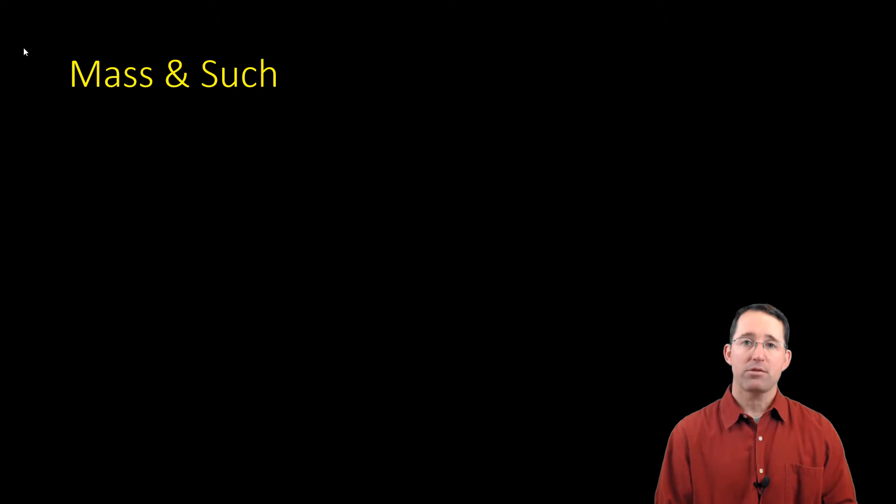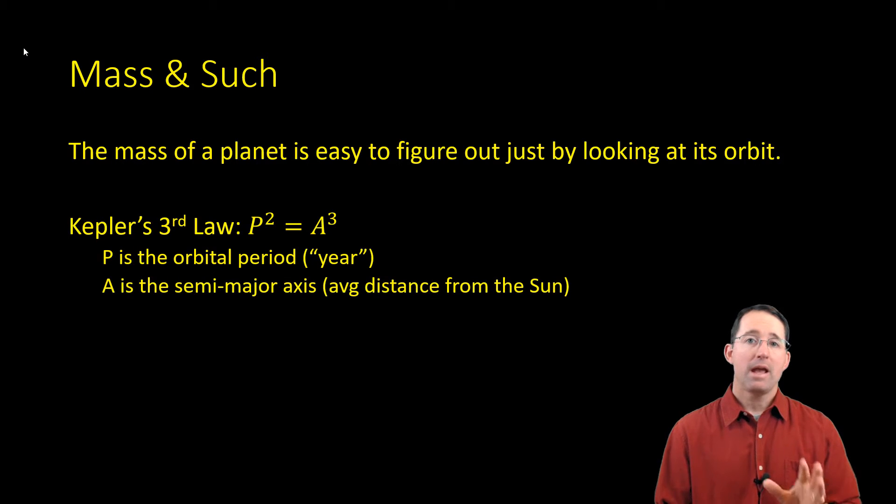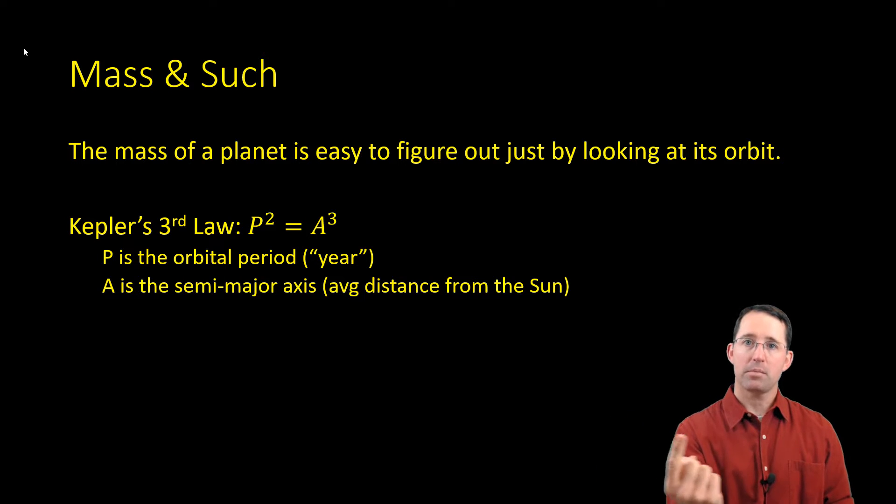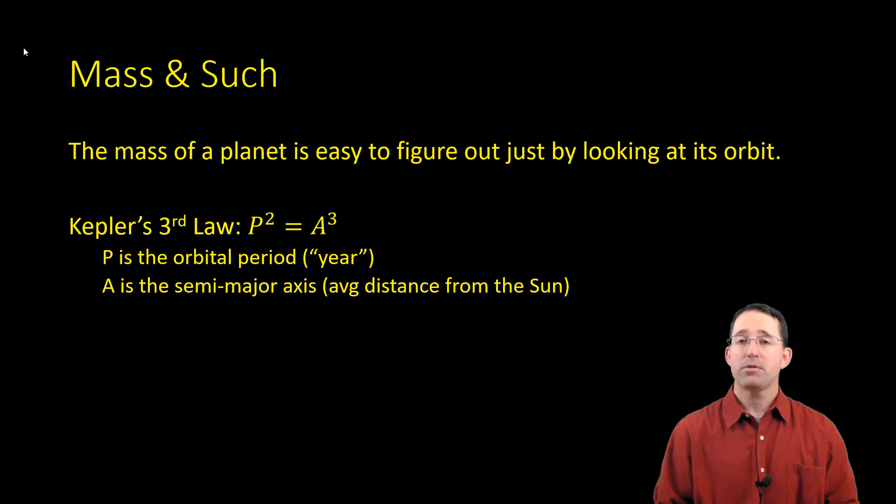Let's take a look at mass first. So the mass of a planet is actually extremely easy to figure out. We can do it just by looking at the planet's orbit. Now, it goes back to Kepler's third law, which you'll see right here, is p squared equals a cubed, where p is the orbital period, how long it takes the planet to go around the sun, or how long it takes a moon to go around the planet. And A is the semi-major axis, the distance between the orbiting object and the central object. So that's Kepler's third law.